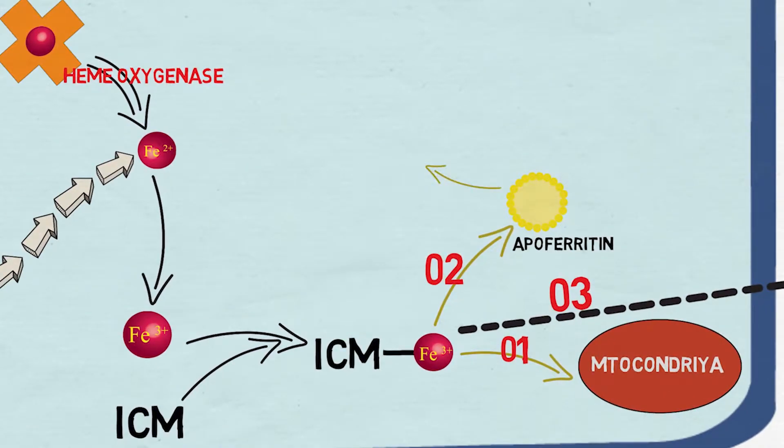Ferric ion binds with apoferritin molecule to form ferritin, which is the main storage form of iron inside the cell. When there is a reduced iron state inside the cell, ferritin can release iron.